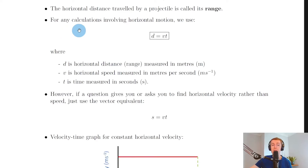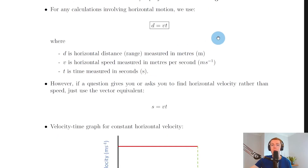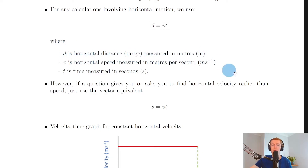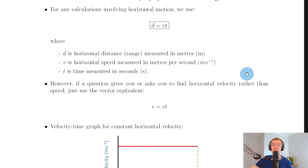For any calculations involving the horizontal motion of a projectile, we use the speed distance time equation d equals vt. We need to be specific about the variables: d is the horizontal distance or range measured in metres, v is the horizontal speed measured in metres per second, and t is the time measured in seconds.